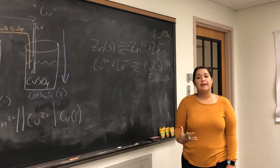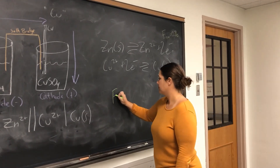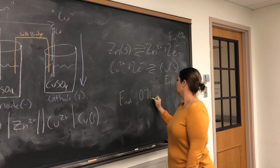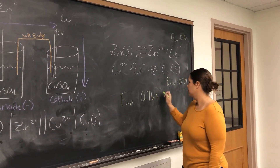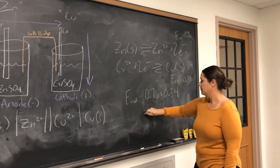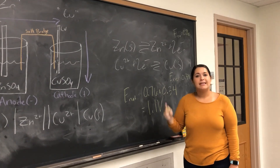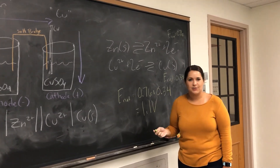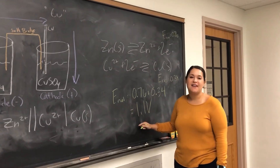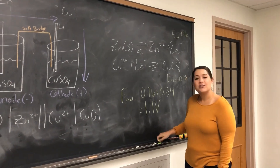Now we just need to solve for our E_net — the potential for the entire reaction. Adding 0.34 and 0.76, I got 1.1 volts. Is this going to be a spontaneous reaction? Yes — this is a positive value, so we expect it to be very spontaneous. Hopefully your experimental results match!